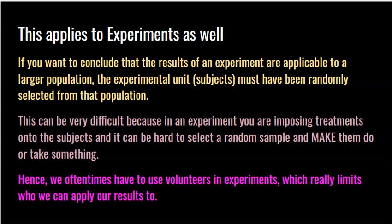This concept also applies to experiments. If you want to conclude that the results of an experiment are applicable to a larger population, the subjects must be randomly selected from that population. If we got a group of people that we randomly selected and put them through an experiment, and we learned that X causes Y, then we should be able to say that X causes Y for all people in the population.